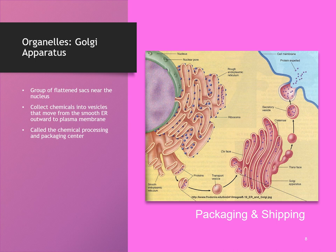A little part of the endoplasmic reticulum wall pinches off from the endoplasmic reticulum, creating a little package — a transport vesicle filled with newly made proteins. This transport vesicle carries those proteins to the Golgi apparatus, the pink structure in the lower right corner. We refer to the Golgi apparatus as the packaging and shipping department.